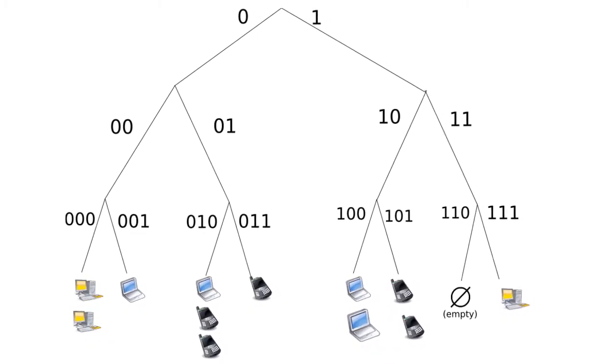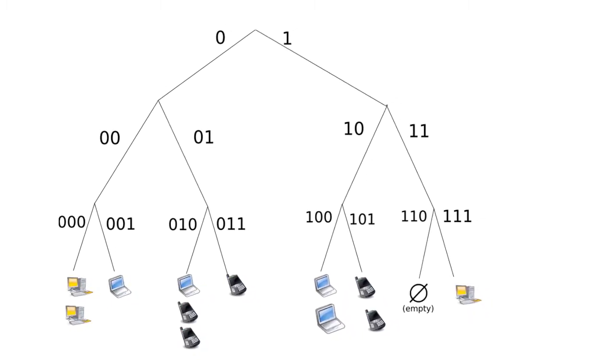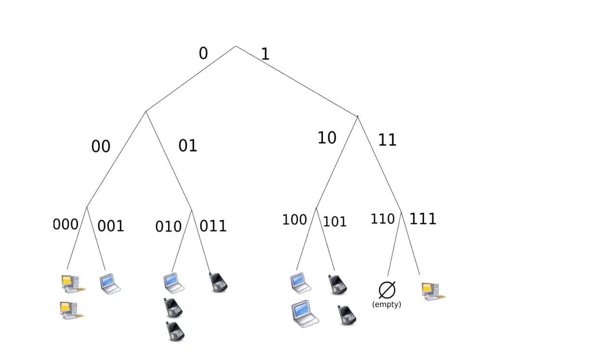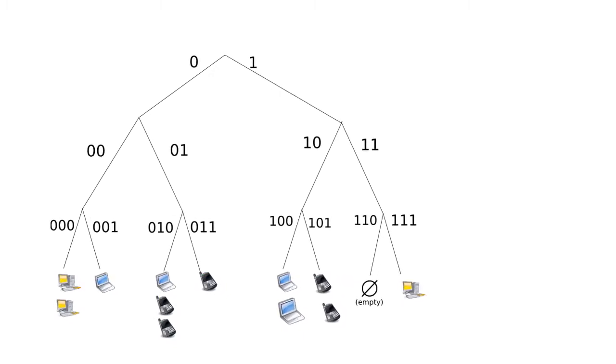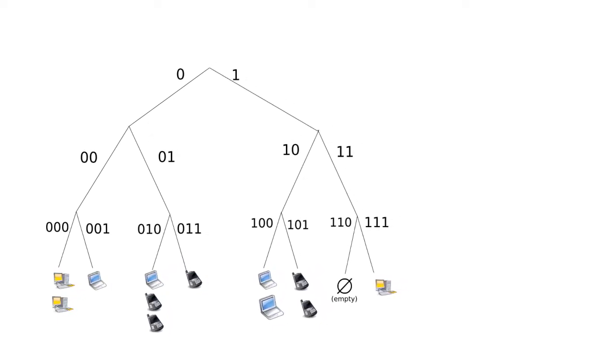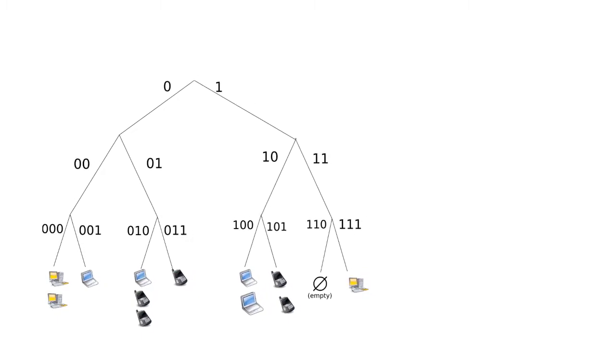In structured peer-to-peer networks, the overlay is organized into a specific topology and the protocol ensures that any node can efficiently search the network for a file or resource, even if the resource is extremely rare. The most common type implements a distributed hash table (DHT), in which a variant of consistent hashing is used to assign ownership of each file to a particular peer. This enables peers to search for resources using key-value pairs stored in the DHT. However, to route traffic efficiently, nodes in a structured overlay must maintain lists of neighbors that satisfy specific criteria, making them less robust in networks with high churn.